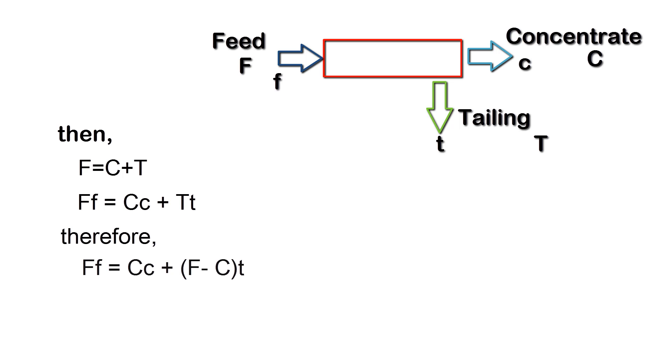Therefore, Ff is equal to Cc plus F minus C into t, which gives F by C is equal to c minus t by f minus t.